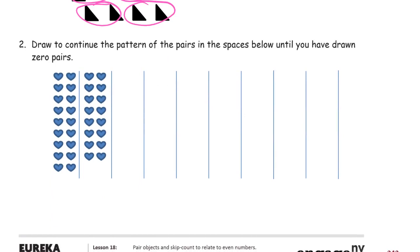Draw to continue the pattern of the pairs in the spaces below until you have drawn zero pairs. So this has one through nine. Nine rows of two. And this has one less. So this is nine rows of two. This is eight rows of two. So the next one's going to have seven rows of two.